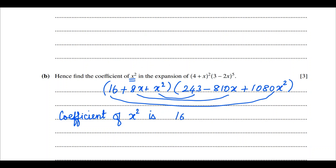The coefficient of x² comes from: 16 × 1080, plus 8 × (-810), plus 1 × 243. This gives 17280 - 6480 + 243, which equals 11043. Thank you.